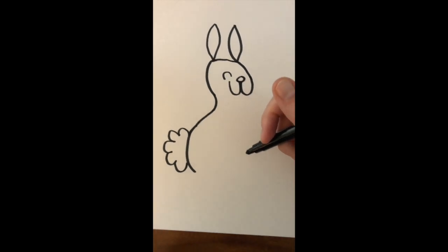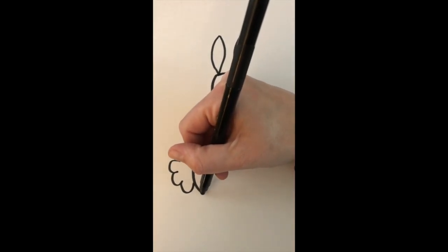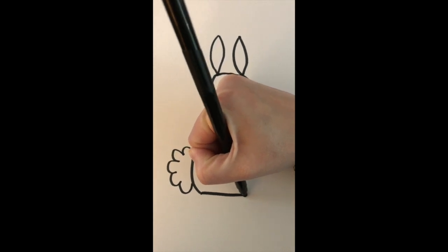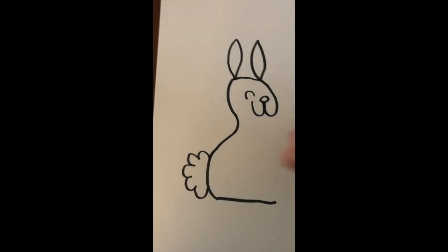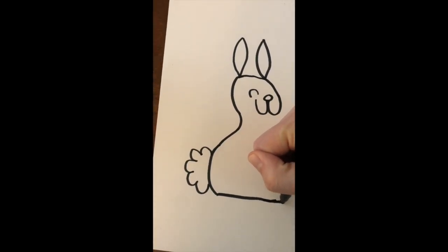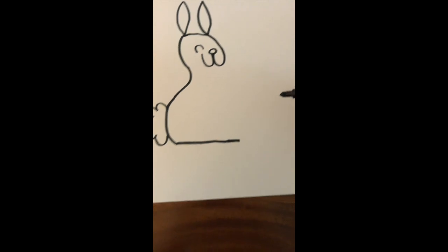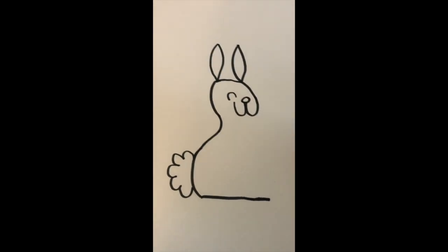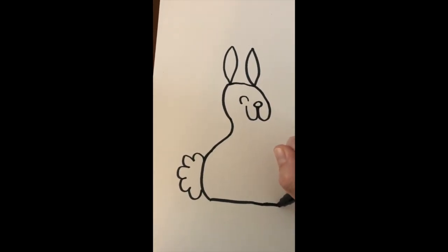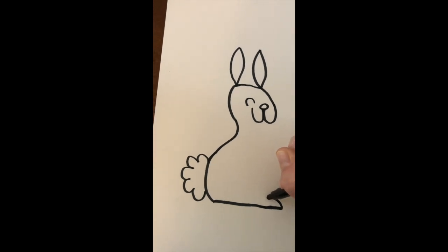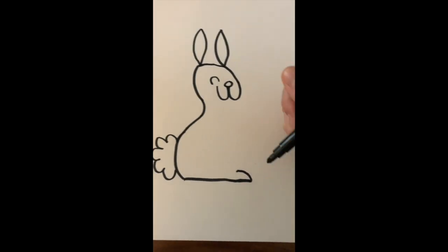Next, for my bunny, I'm going to make a line straight across the bottom. Maybe a little longer. Flat with the bottom of the paper. And then I'm going to come up in a curved line to make a foot.